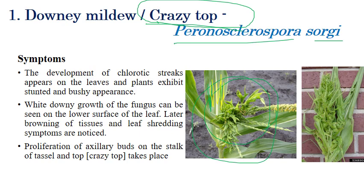There is proliferation of axillary buds and the tassels at the top. The entire cob is converted into downy growth — there is no normal cob visible. The entire cob is replaced by downy growth of the fungus, and stunted growth can also be observed.